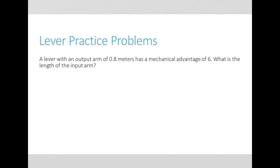A lever with an output arm of 0.8 meters has a mechanical advantage of 6. What is the length of the input arm? Again, mechanical advantage for levers is the length of the input arm divided by the length of the output arm.